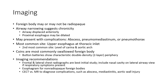Imaging: the foreign body may or may not be radiopaque. Airway narrowing suggests chronicity. The airway may be displaced anteriorly. Proximal esophagus changes may be present. Complications such as abscess or pneumothorax may be present. The most common sign is at the esophagus and thoracic inlet; the second most common sign is at the level of the carina and aortic arch.